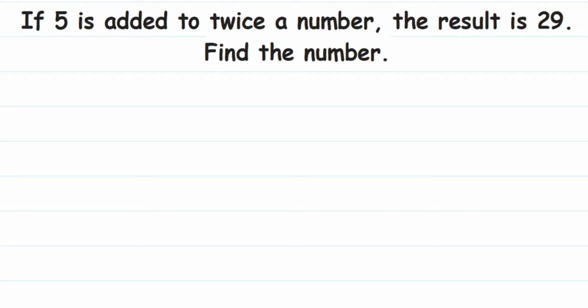Hey everyone, here is a question from Simple Equations Class 7, or we can also say it is from Linear Equations of Class 8. The question is very simple: If 5 is added to twice a number, the result is 29. Find the number. Here we have given a relationship between 5 and a number.